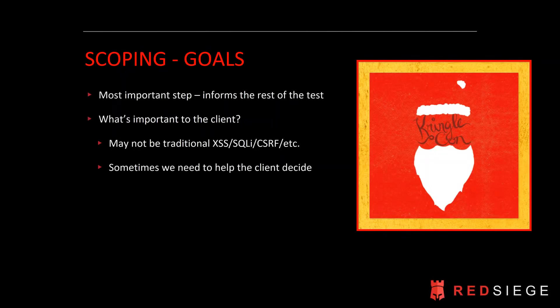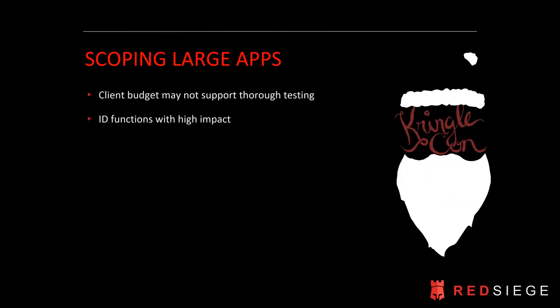The reality in pen testing is that sometimes we need to help the client decide what the scope is — they may not know. They may have had an auditor tell them they need a pen test done, and that's all the information they have. This is especially true with large applications. In a very large application, a client might not have the budget — whether time or money — to support thorough testing, so we have to make compromises about what we're going to test.